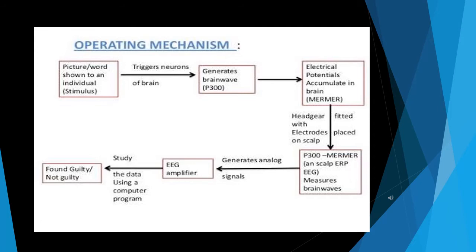When a brainwave generates, an electrical potential accumulates in brain. A headgear with electrodes on a scalp is fitted in place so that it measures the brainwaves and generates an analog signal which is seen in an EEG amplifier.